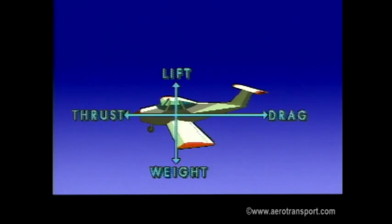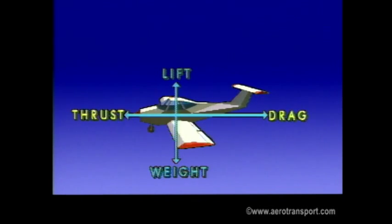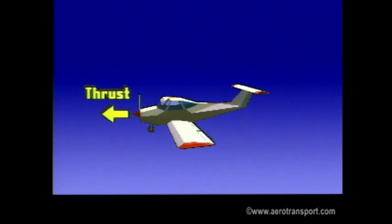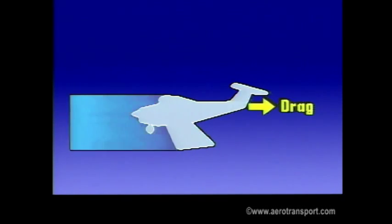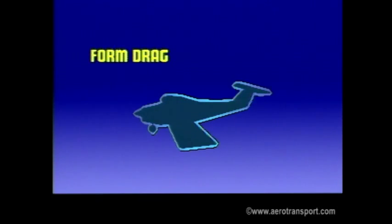We'll now deal with the other two main forces affecting flight: thrust and drag. In level flight, thrust and drag are the two horizontal forces acting on the aircraft. Thrust, the forward motion, is provided by the aircraft's propeller. Drag results from the resistance to the aircraft passing through the air. We'll consider four types of drag.